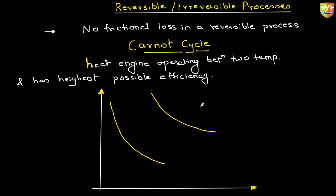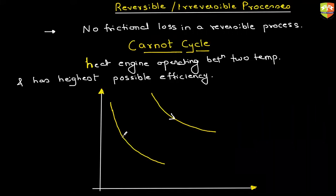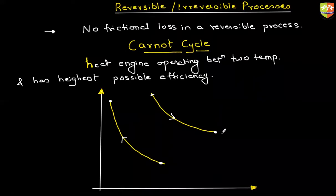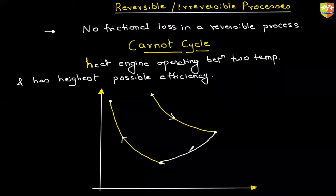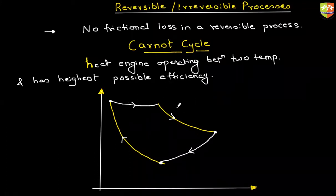Now I need to complete the cycle also. When it is absorbing heat it should expand, and when it is releasing heat it should contract, but the cycle should be completed. There should be a line from here joining the line there, and from here it should join there. What should these lines be? Adiabatic — because heat exchange is not allowed when going from here to there. Heat should only be exchanged at the reservoir temperature. So let's draw this — this is the Carnot cycle.